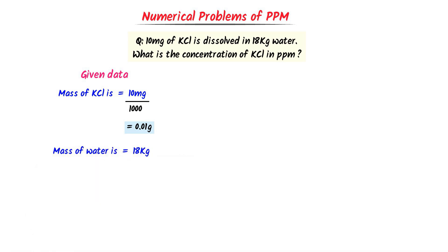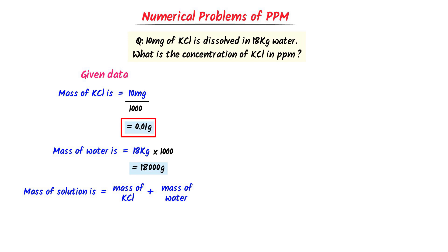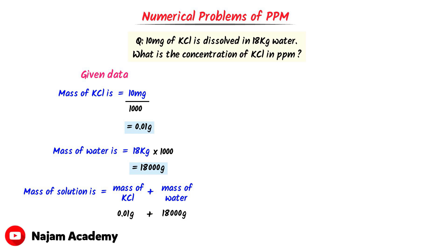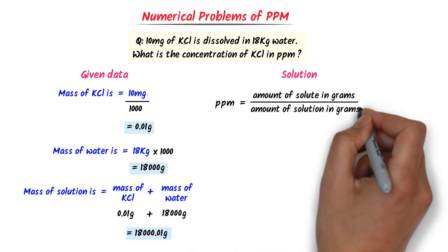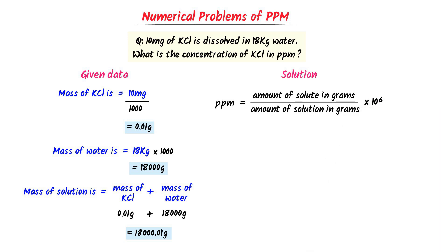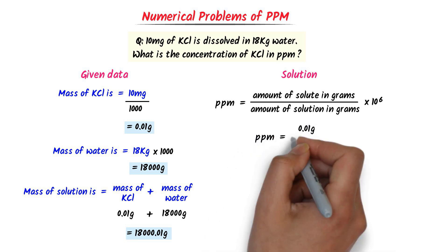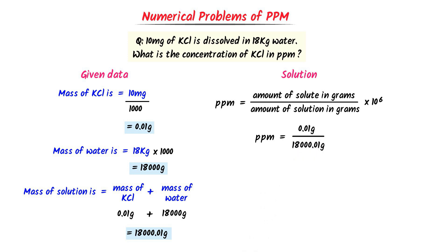The given mass of water is 18 kg. I convert it to grams by multiplying by 1000, and I get 18,000 grams. The total mass of the solution equals mass of potassium chloride plus mass of water: 0.01 grams plus 18,000 grams equals 18,000.01 grams. Using the formula — amount of solute in grams upon amount of solution in grams multiplied by 10⁶ — I substitute: 0.01 upon 18,000.01 into 10⁶. After calculation, I get 0.56 ppm of potassium chloride.